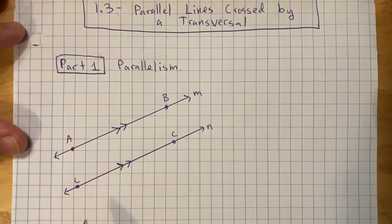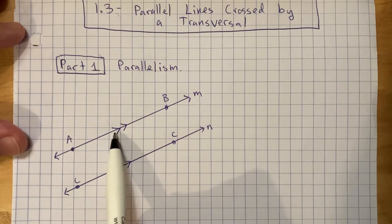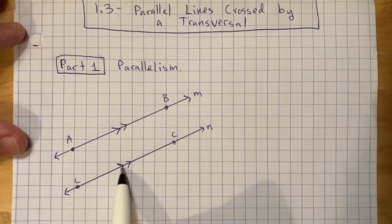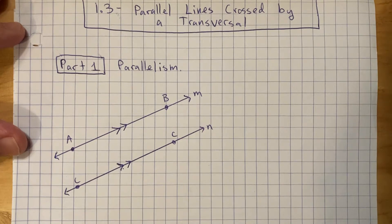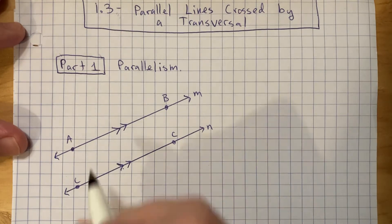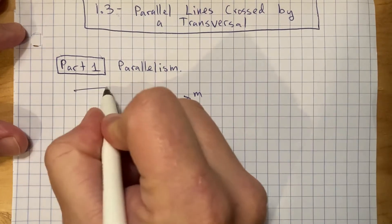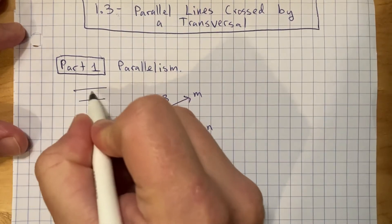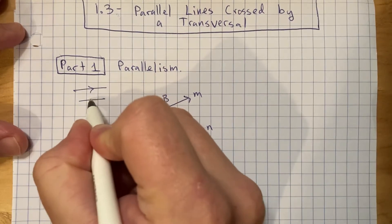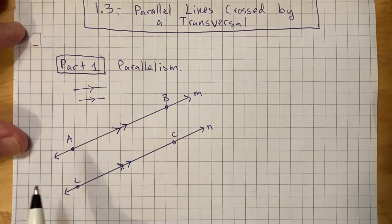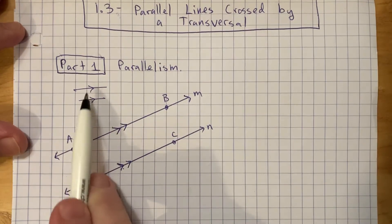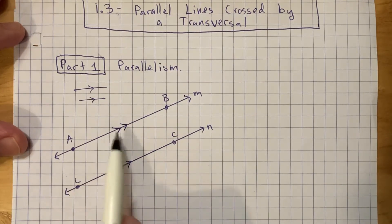So these symbols mean, since they each have the same number of little arrows, these lines are parallel to one another. I might have a different set of lines that are parallel in the diagram — they each only have one arrow, so these are parallel to each other, but not parallel to those others.